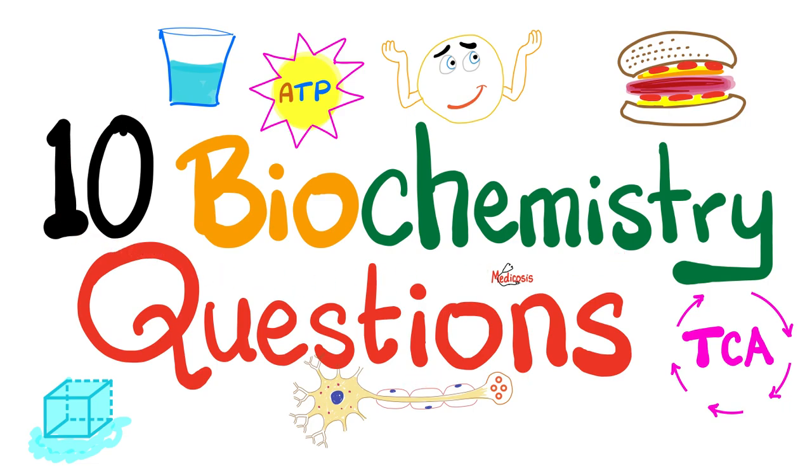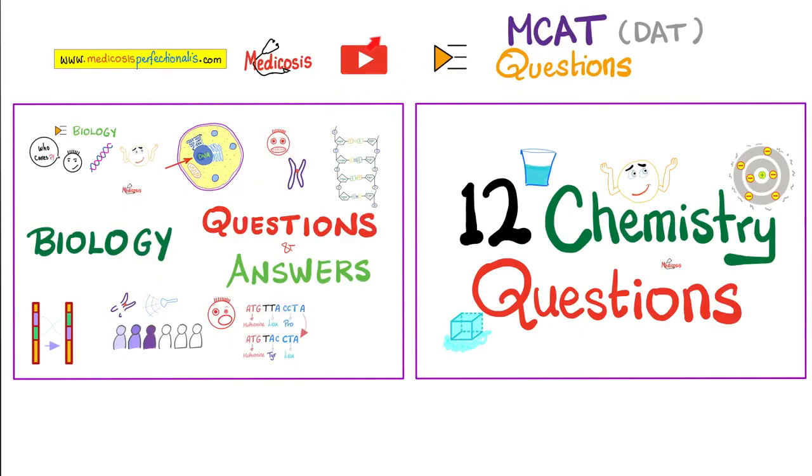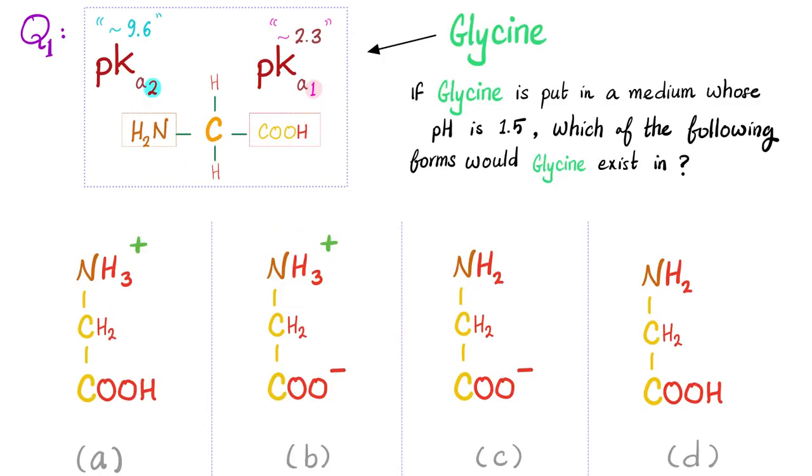Here you have 10 biochemistry questions with answers, of course, so let's get started. Please get a piece of paper. Try to answer each of these questions before I tell you about the answer key, and let's see how many of the 10 questions you'll get right. This video is part of my playlist called MCAT Questions. You'll find biology questions, biochemistry questions, general chemistry questions, and before you know it, you might even find organic chemistry questions.